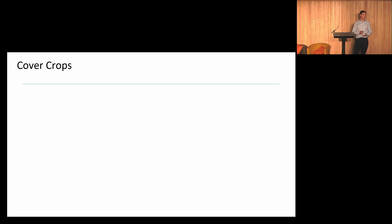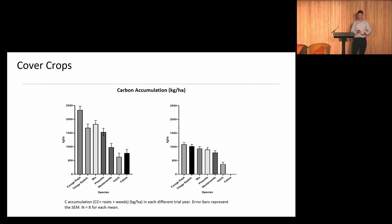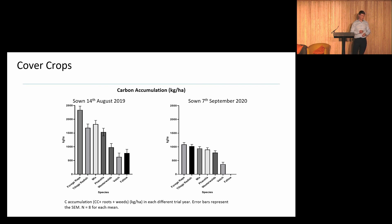The main benefit of cover crops was their ability to act as a biofertiliser — returning macronutrients, micronutrients and carbon, with considerable carbon accumulation and return to soil. Each graph represents two different years, with differences in biomass accumulated primarily due to delayed sowing. The graph sown on 14th August versus one sown on 7th September — early sowing is key to the success of a cover crop to get that biomass growth and nutrient acquisition. Forage rape in 2019 was able to accumulate over two tonnes per hectare of carbon, whereas in the second year it was one tonne per hectare.